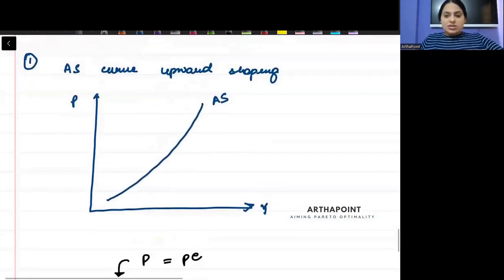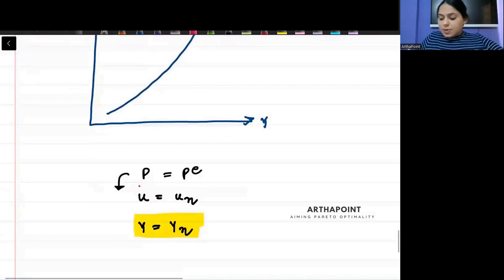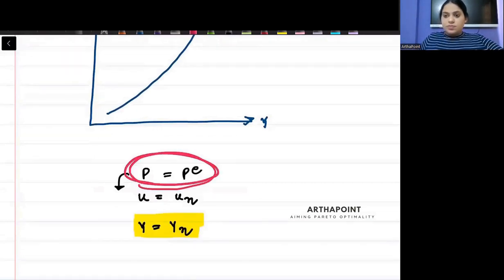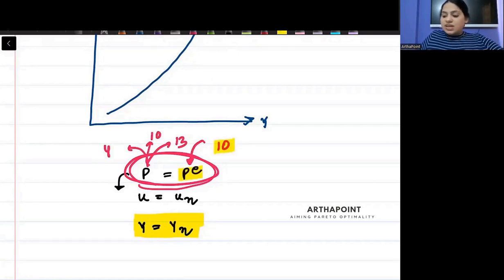So try to understand this thing. I am saying that in actual economy, people may not have P equal to PE. Price expectation ho sakti hai that I may expect price to be 10, but price can be 4 also. Price can be 13 also, and price can be 10 also.